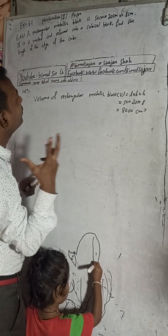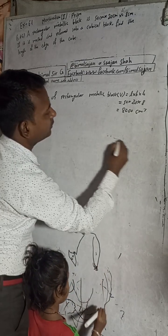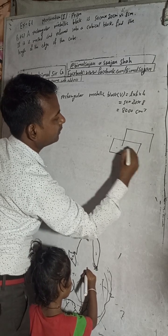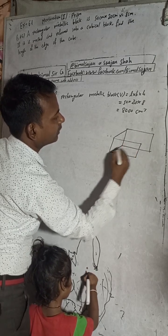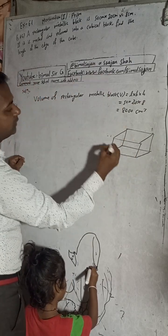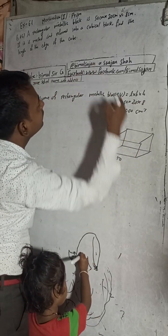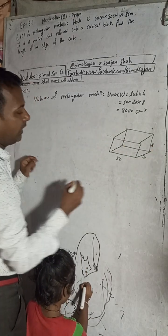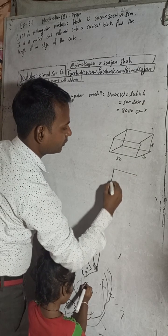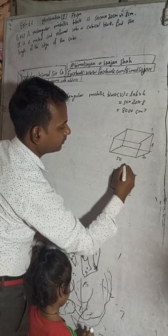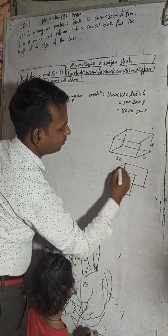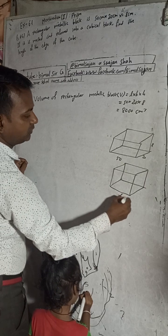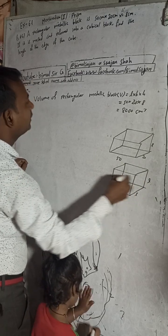Now the question is: if it is melted and reformed into a cubical block. So suppose this is a rectangular block — 50 × 20, height 8 cm — and when it is melted and formed into a cubical block, cubical means all sides are equal, so l = l = l, all are l.